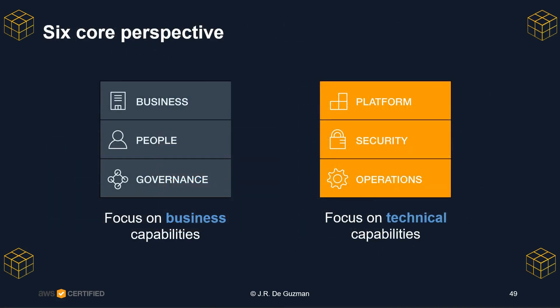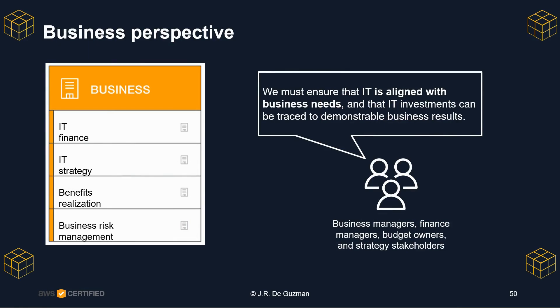In general, the Business, People, and Governance perspectives focus on business capabilities, while the Platform, Security, and Operations perspectives focus on technical capabilities. Stakeholders from the Business perspective — for example, business managers, finance managers, and budget owners — can use the AWS Cloud Adoption Framework to create a strong business case for cloud adoption and prioritize cloud adoption initiatives. Stakeholders should ensure that an organization's business strategies and goals are aligned with its IT strategies and goals.